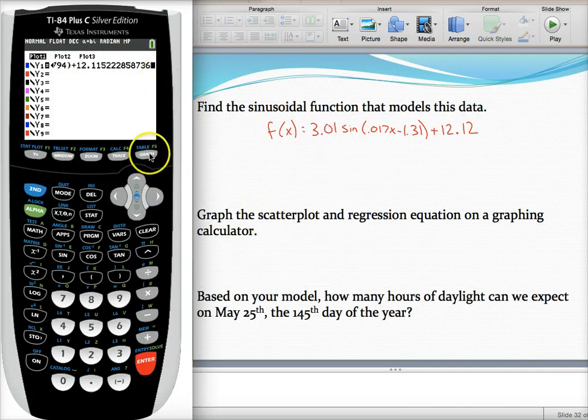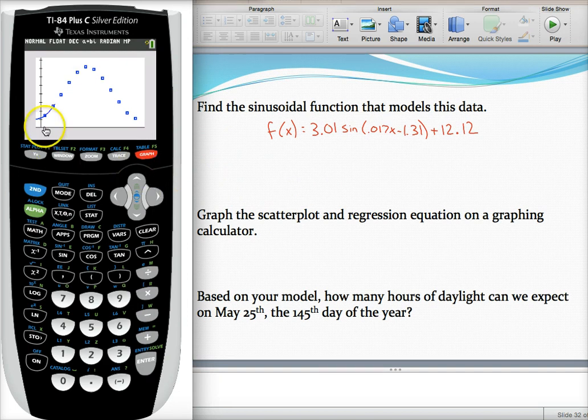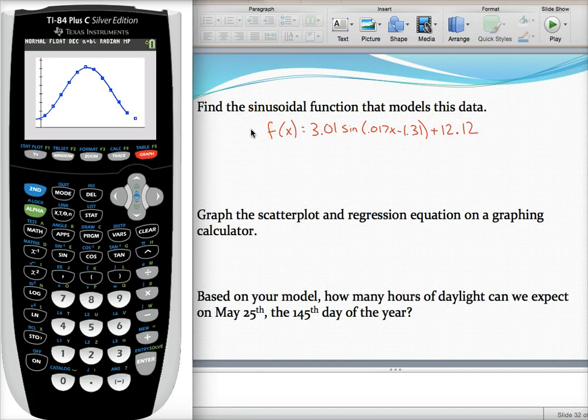So now when you hit graph, remembering to be in radian mode, you should see that your curve almost fits that data perfectly. The days get longer in the summer, and then the days get shorter again in the winter, and so on. So there we go. It's really cool looking, I think.